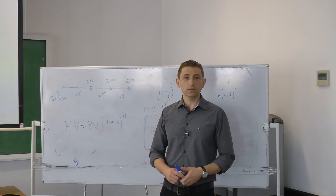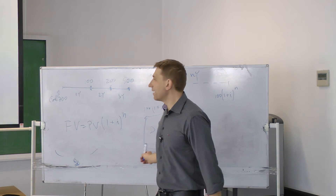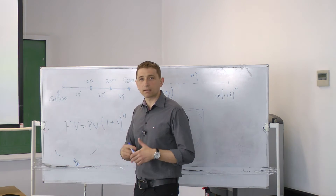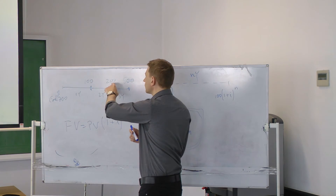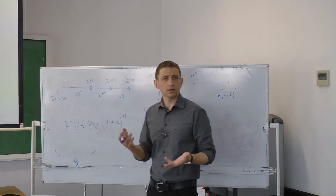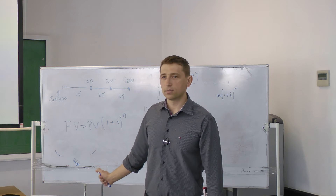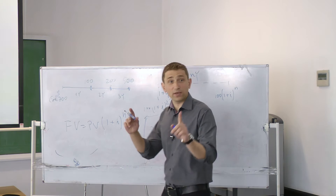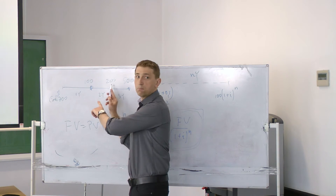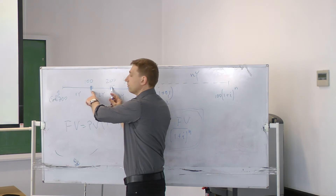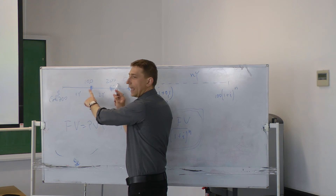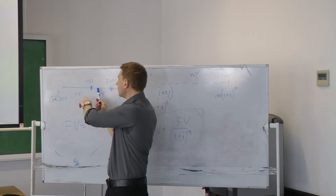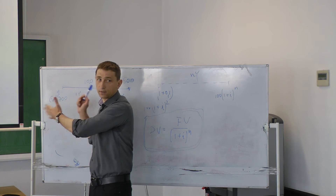We should use the present value formula. Why is it not a good idea to simply sum up these amounts and compare with the cost? The first thought might be: 100 plus 200 plus 500 is 800, and 800 is higher than 700. Why should I not do this? Because of the time value of money — these are different moments of time in the future. I should not add these amounts, and I cannot compare future money with present money because they are different.